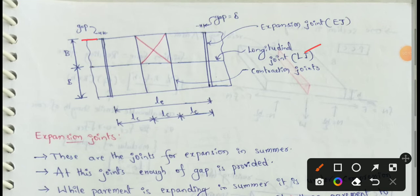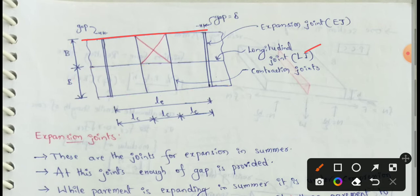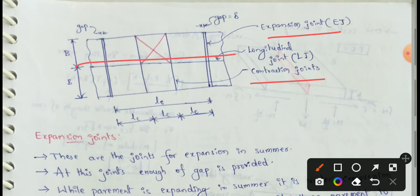If we have a rigid pavement of 4.5 meters, the longitudinal joints are present in the middle, running in the length direction. The second type is lateral joints. There are two types of lateral joints: first, expansion joints, and second, contraction joints. These lateral joints run across the longitudinal direction.